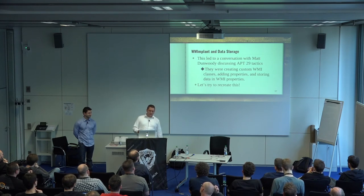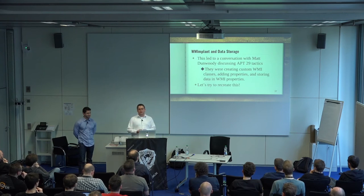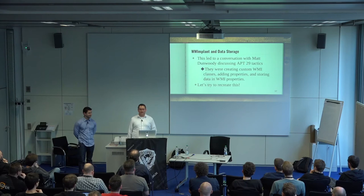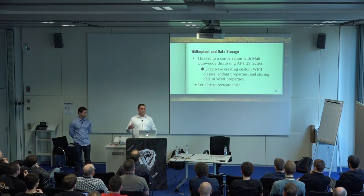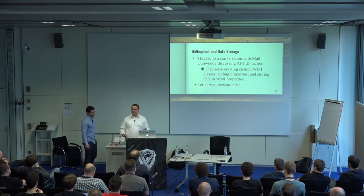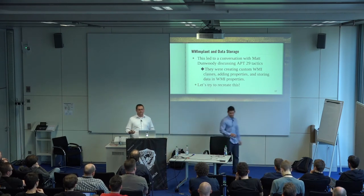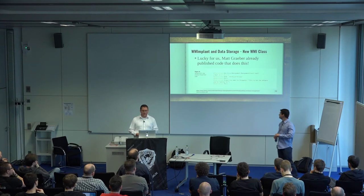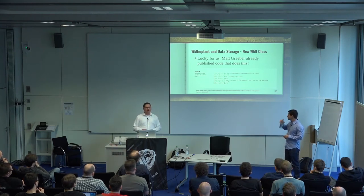After talking with Matt Dunwoody, he brought up APT 29 — a group that creates custom WMI classes and shoves data within properties of that class for data storage. That sounded like a pretty nifty idea. So we kind of removed this registry requirement and tried to recreate it. Matt Graber published code to do this, so we had a working proof of concept to create a class called 'evil class,' put it on the system, and add a property with whatever value.